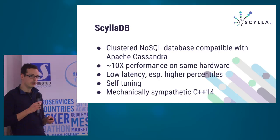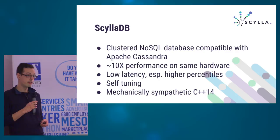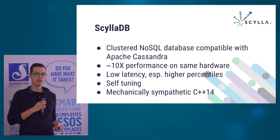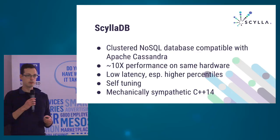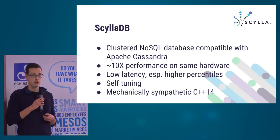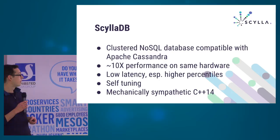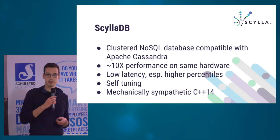ScyllaDB is a database — a NoSQL database — compatible with Apache Cassandra. It is compatible in that you interact with ScyllaDB the same way you interact with Cassandra. You use the same tools, they share the same storage format, and it's very easy to migrate. ScyllaDB, however, distinguishes itself by being ten times faster on the same hardware — not only ten times faster, but ten times faster with lower latency. And it has about a hundred fewer tunables than Cassandra. It is mostly self-tuning.